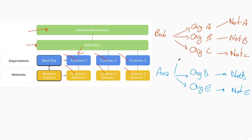And you can do that cross-access. So Bob wants to give access to Anna to organization B and network B — and you can do that. Then Anna wants to give access to Bob to organization E, so Bob will have access to organization E and therefore to network E. The next time Bob logs in, it's going to be organizations A, B, C, plus E. That's why you have a Managed Service Provider portal — because you can have access to different organizations and networks at the same time. That's the dashboard cloud architecture.